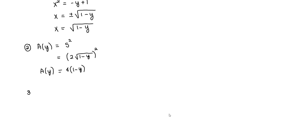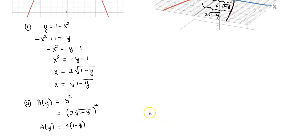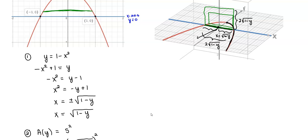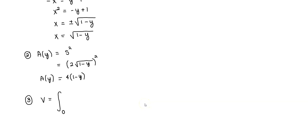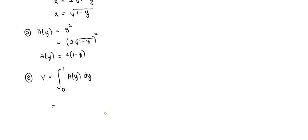Now we need to find our volume. We need to figure out the y-values for our bounds. Looking at the graph, the origin is at (0, 0), giving a lower bound of 0 and an upper bound of 1. So the volume equals the integral from 0 to 1 of A(y) dy, where A(y) equals 4 times (1 minus y). Factoring out the 4, we integrate 1 minus y from 0 to 1.